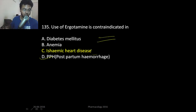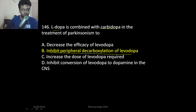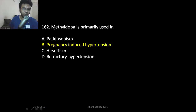A combination of levodopa and carbidopa is used to inhibit the peripheral decarboxylation of levodopa. Please don't confuse levodopa with alpha-methyldopa, which is an antihypertensive and the drug of choice in pregnancy-induced hypertension.